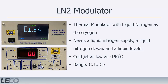The LN2 system can obtain cold jet temperatures as low as negative 196 degrees Celsius and effectively cryofocus compounds with a volatility range between C4 and C40.